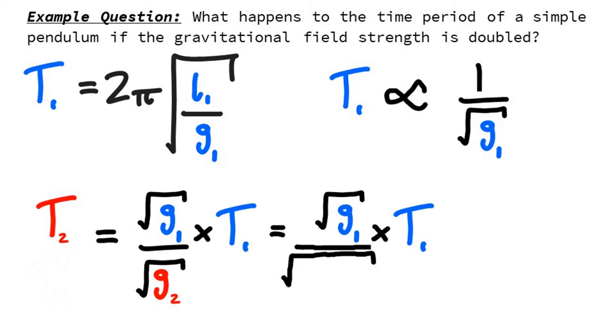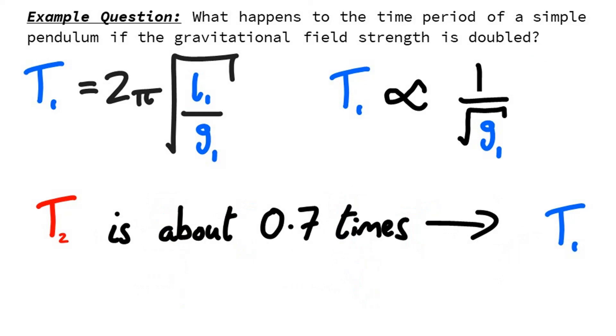Our question says that the field strength has doubled. So g2 is equal to 2 times g1. That's what we put into our equation. And after tidying up the denominator a little bit, our root g1s sort themselves out. Giving us T2 equals 1 over root 2 times T1. In other words, T2 is about 0.7 times T1.